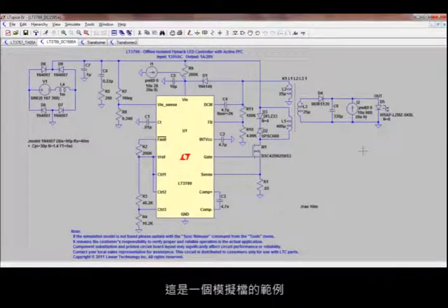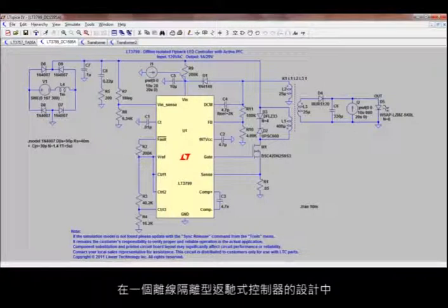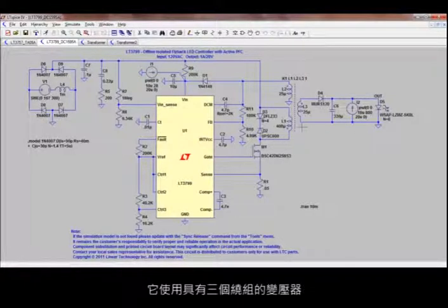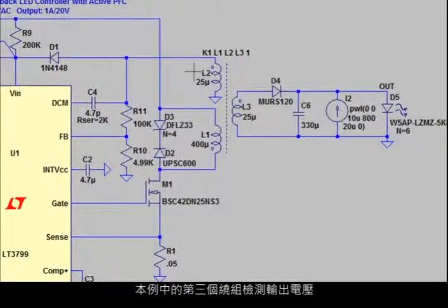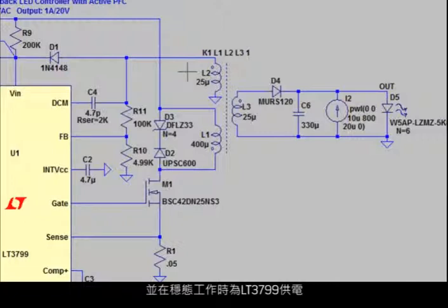Here's an example simulation file that uses a transformer with three windings in a design of an offline, isolated, flyback LED controller. The third winding in this example senses the output voltage and also supplies power to the LT3799 in steady-state operation.